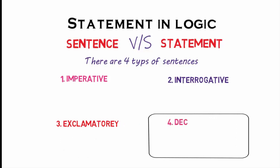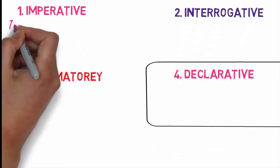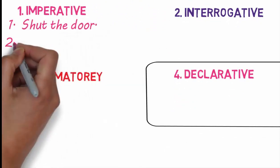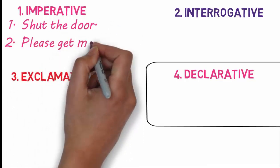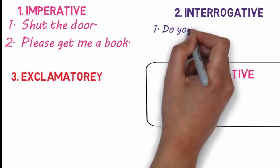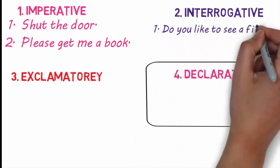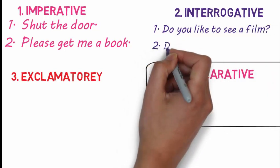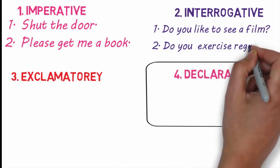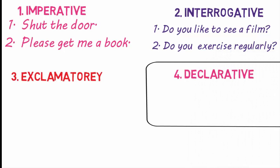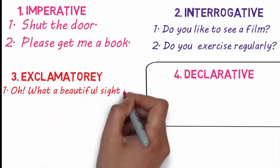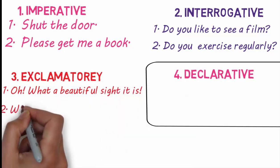We shall see a couple of examples of each type of sentence. Imperative: shut the door, please get me a book. Interrogative: do you like to see a film? Do you exercise regularly? Exclamatory: oh, what a beautiful sight it is! What a heavy downpour!